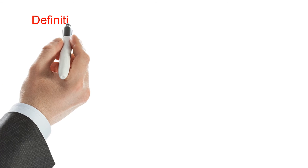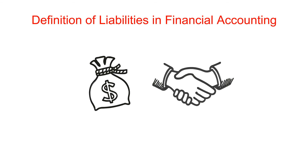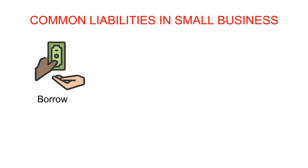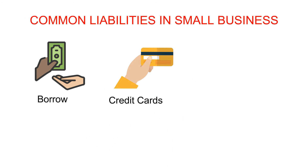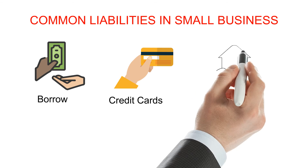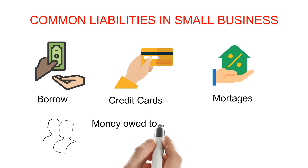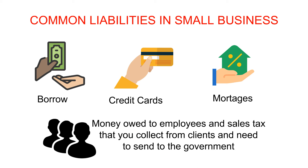Liabilities can be found on a business's balance sheet, a common financial report generated via your accounting software. The definition of liability in financial accounting is a business's financial responsibility. If you borrow instead of paying outright, you have liabilities. Paying with a credit card is considered borrowing too, unless you pay off the balance before the end of the month. A business loan or getting a mortgage on business real estate definitely counts as a liability. Money owed to employees and sales tax that you collect from clients and need to send to the government are also liabilities common to small businesses.